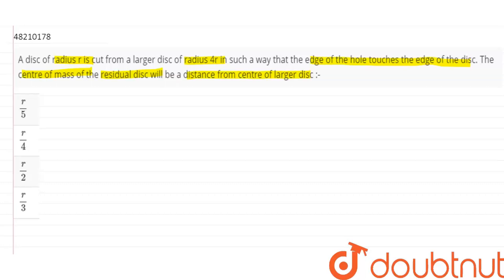What do you see here? The radius of the bigger disk is how much? The radius of the bigger disk is 4R. The radius of the smaller disk is R.